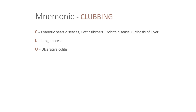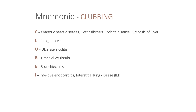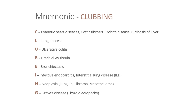U is for ulcerative colitis. The two B's are for bronchiectasis and brachial AV fistula. I is for infective endocarditis and interstitial lung disease. N is for neoplasia including lung carcinoma, fibroma, or mesothelioma. And G is for Graves' disease.